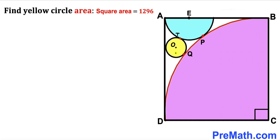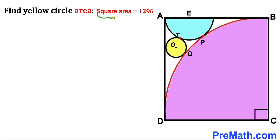Welcome to pre-math. In this video we have a yellow circle, a blue semicircle, and a purple quarter circle fully inscribed in a square ABCD, such that the quarter circle is tangent to the blue semicircle at point P, tangent to the yellow circle at point Q, and the semicircle and yellow circle are tangent to each other at point T. The area of square ABCD is 1296 square units, and our task is to calculate the area of the tiny yellow circle.